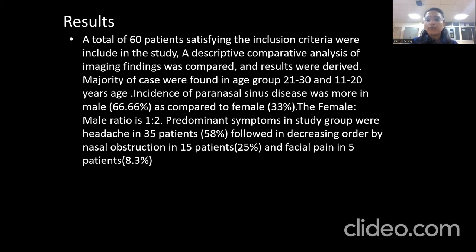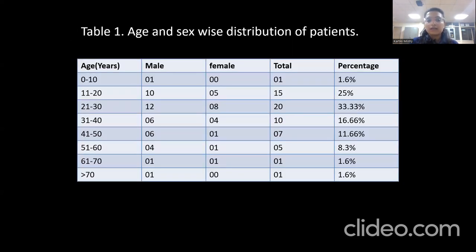Majority of cases were found in the age group of 21 to 30 and 11 to 20 years. Incidence of paranasal sinus diseases was more in male patients compared to female patients, with a male to female ratio of 1:2 in our study. Predominant symptoms were headache in 35 patients, followed by nasal obstruction and then facial pain. The table shows age and sex-wise distribution, with most patients affected in the second and third decade of life, with males predominantly affected.